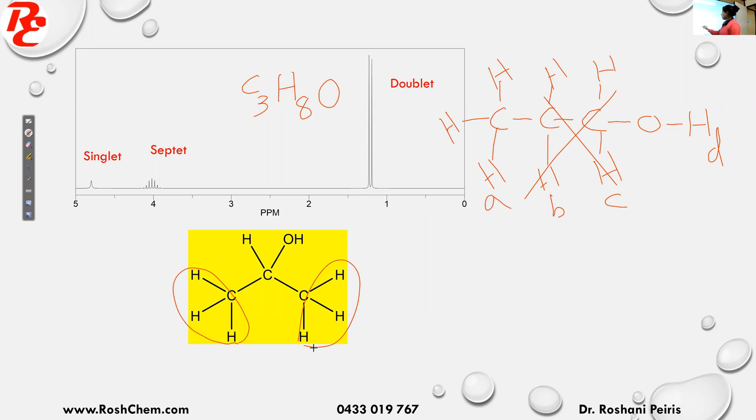These two CH₃ hydrogens, they are same. So this one and this one, they are the same. They are attached to the same carbon. That's type A. And this hydrogen here is type B. And the OH hydrogen is type C. And also you can see this splitting is consistent with the structure. The OH hydrogen is giving you a singlet. That's the OH hydrogen.